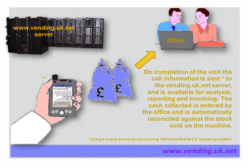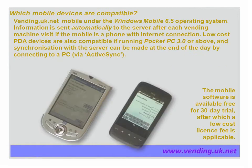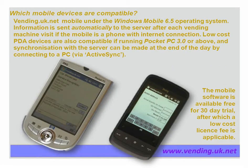Cash will be sent to the office for counting. Vending UK mobile devices are Windows Mobile phone or PDA devices. The device on the left of the screen is an example of a low-cost PDA, which will require plugging into a PC at the end of the day to synchronize data. The mobile phone device, shown on the right, will send visit reports immediately. Suitable devices must run Windows Mobile 6.5 operating system, in the case of the mobile phone, or Pocket PC 3.0 or above for PDAs.